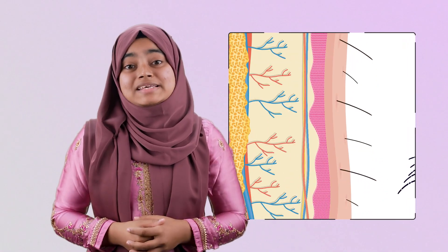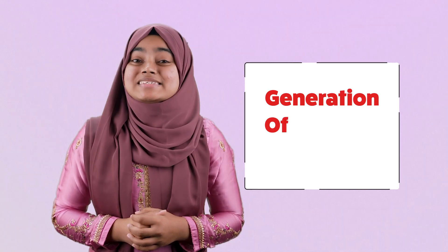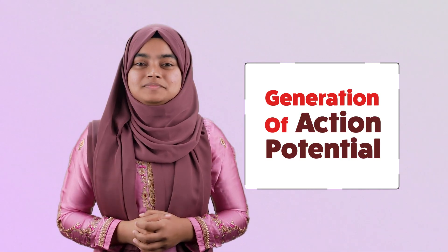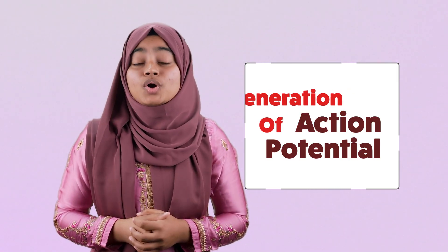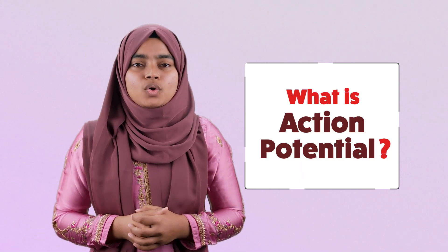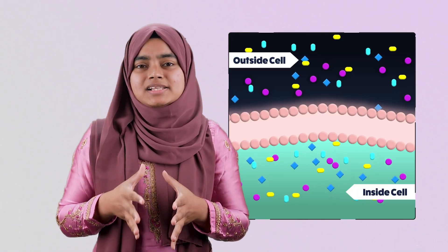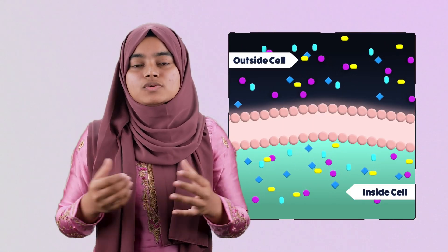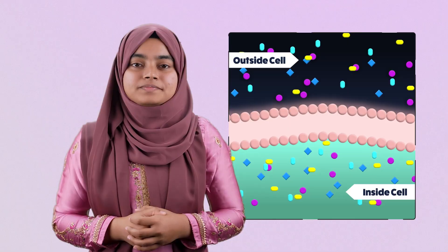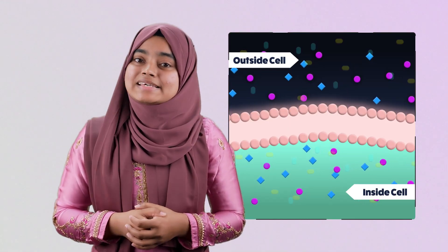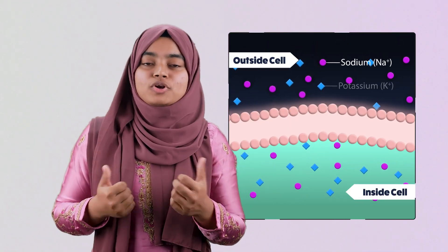When a neuron is stimulated by any stimulus — like a mosquito bite — an electrical impulse is generated within the neuron. An interesting thing occurs at this time, which is the generation of action potential. Action potential is an electric potential generated inside a cell due to movement of certain ions through the membrane of that cell. For a neuron, these ions are sodium ion and potassium ion.